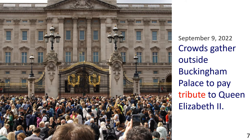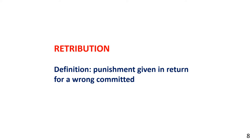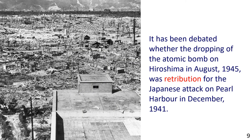Next: Retribution. Definition: punishment given in return for a wrong committed. The picture shows Hiroshima after the atomic bomb was dropped. The sentence reads: It has been debated whether the dropping of the atomic bomb on Hiroshima in August 1945 was retribution for the Japanese attack on Pearl Harbor in December 1941.